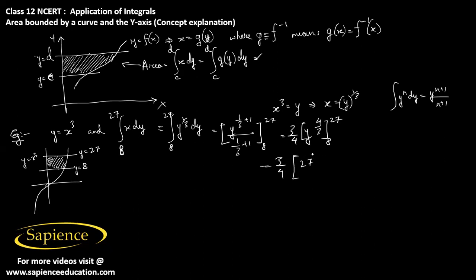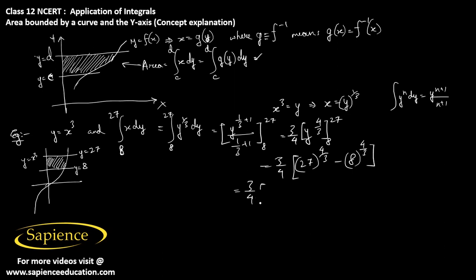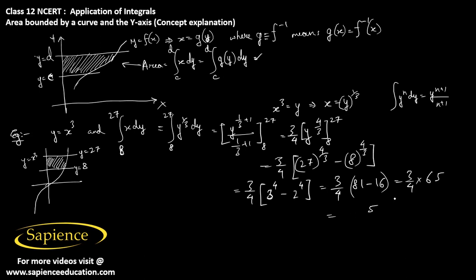This equals 3 by 4 into 27 power 4 by 3 minus 8 power 4 by 3. The cube root of 27 is 3, so 27 power 4 by 3 equals 3 power 4 equals 81. The cube root of 8 is 2, so 8 power 4 by 3 equals 2 power 4 equals 16. So this becomes 3 by 4 into 81 minus 16, which equals 3 by 4 into 65, giving 195 by 4 square units. This is the required area of this region.